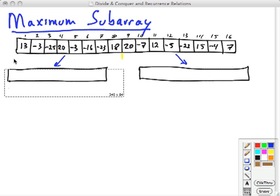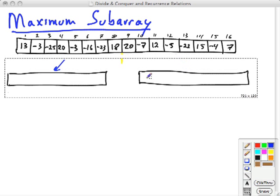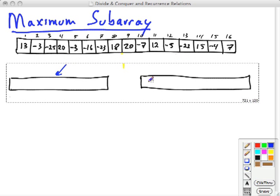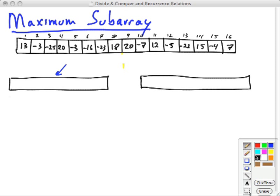But the maximum subarray, there's a third situation where it could fall not in the left half or right half strictly, but it could fall on the boundary. It could cross this boundary here. There's possibly some maximum subarray. Actually, we don't know exactly where these boundaries are. We would have to check the whole thing. It's possible that the maximum subarray crosses the boundary.